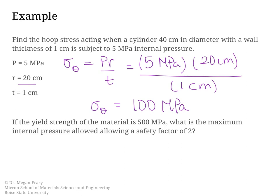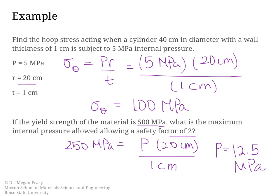Now, as a follow-up, if the yield strength of the material is 500 MPa, what is the maximum internal pressure allowed if we have a safety factor of 2? That would mean we will tolerate a stress of 250 MPa. So we can set 250 MPa equal to P times 20 centimeters divided by 1 centimeter. And we would solve to find that the maximum allowed internal pressure is 12.5 MPa. So this is the way that we can use the hoop stress equations to understand the stresses present in a cylindrical vessel.